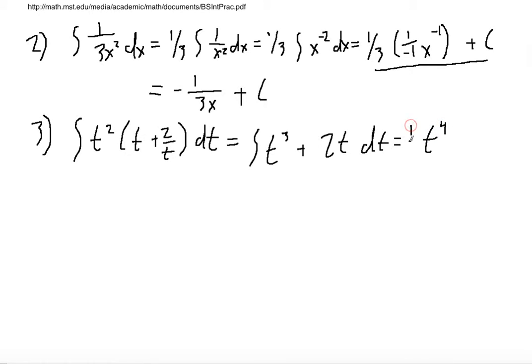This gives us t to the fourth times 1/4 plus 2 times t² times 1 over this power, plus C, which I'll clean up a little bit into 1/4 t⁴ plus t² plus C.